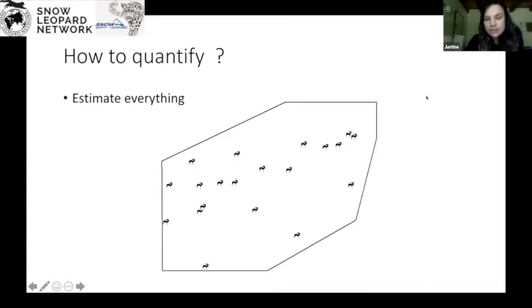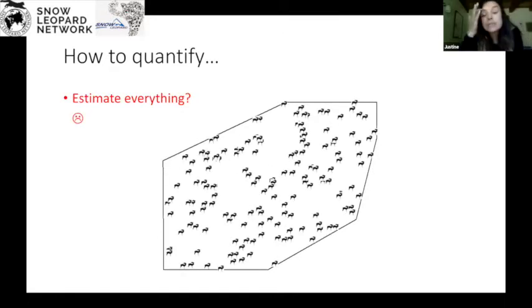So if we do want to quantify abundance and we want to estimate everything, how would we go about and do this? Maybe we would go around and just go and count everything, right? If this was like a farm or maybe someone's garden, we would go around and count. But what if things got really difficult? There were many more ibex in your garden or across a whole mountain area, it would get a little bit more difficult to go and count your ibex. It might be possible, but a bit more difficult.